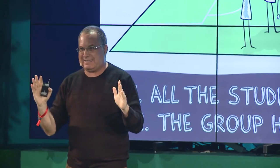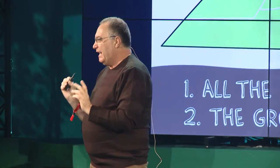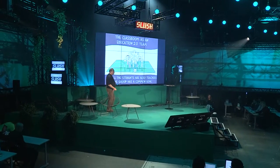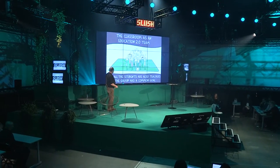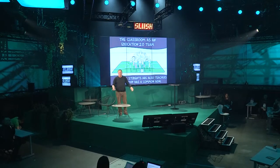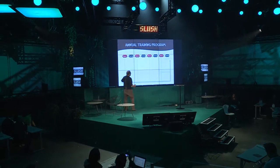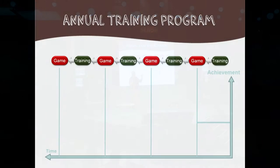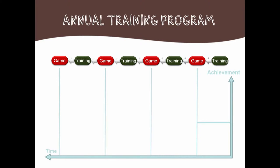We build a class we call an Education 2.0 team, and we go into traditional schools. We have only two rules: the first rule — every student is a teacher; the second rule — we have a common grade. In the regular school, every student has their own grade. We say, let's make a common grade. We build a graph with training cycles and a game. The game is the exam, and all the students are training for the game together. It becomes like a social learning feedback loop.